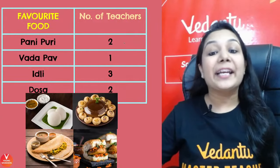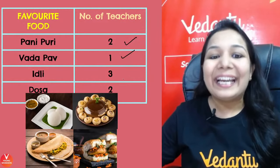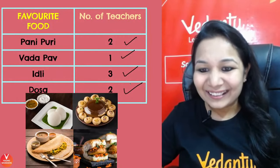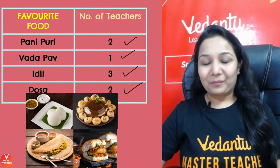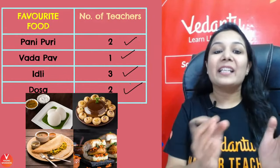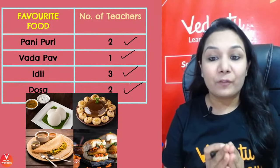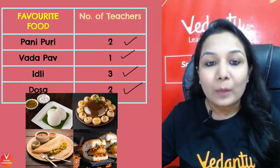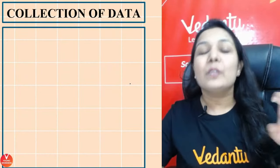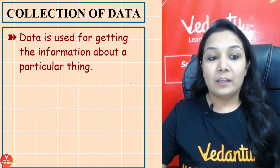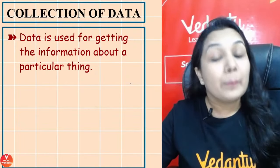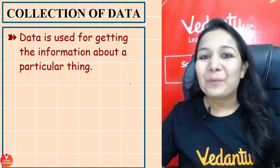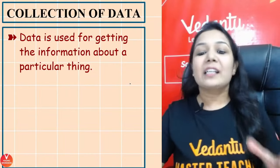Paani Puri was liked by two teachers, Idli by three teachers, and Dosa by two teachers. This is how we organize the data into different parts by different methods, which we will be learning today. The first one will be mean. But before that, let's see what is required in collection of data. Data is the information about a particular thing — for example, the favorite food of your master teachers.